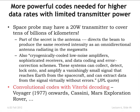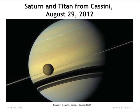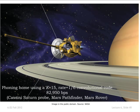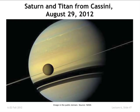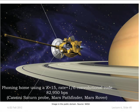An example is Cassini, which is in orbit around Saturn and is actively sending pictures. This is a picture of one of Saturn's moons — you can see the rings and shadows of the rings. The kind of code used is a convolutional code. We'll learn what the parameters mean and how they enter into the definition of the code. A typical data rate here is on the order of 83,000 bits per second — that's the rate at which the data is coming in.